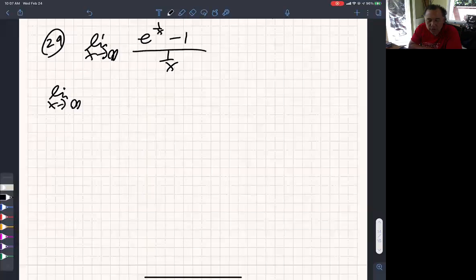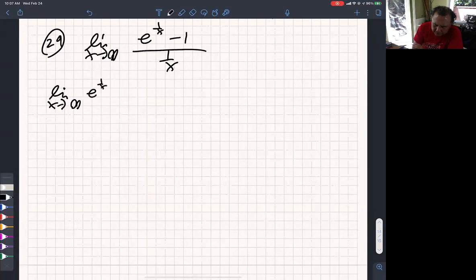So this is 4.7, number 29. I'm going to find the limit of the top. 1 over infinity is 0, and e to the 0 is 1. So 1 minus 1, the top approaches 0.